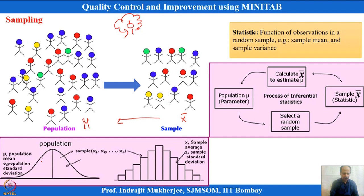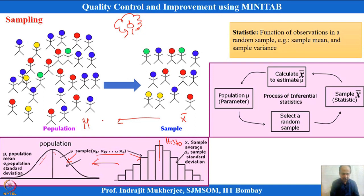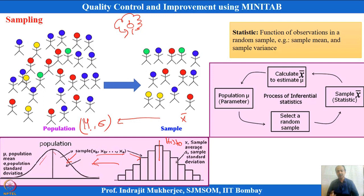From sample information — represented as a histogram — we predict population behavior. The population can follow a normal distribution with two parameters: mu (mean) and sigma (standard deviation). Assuming normality, we take samples and try to predict what the population parameters should be — what mu and sigma values look like. That is what we are doing in statistics: making inference from sample information.